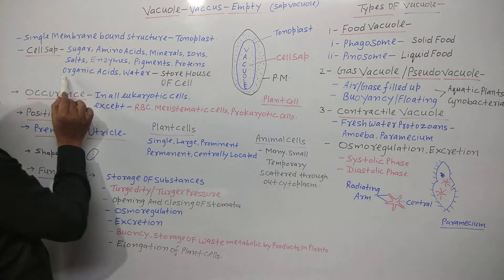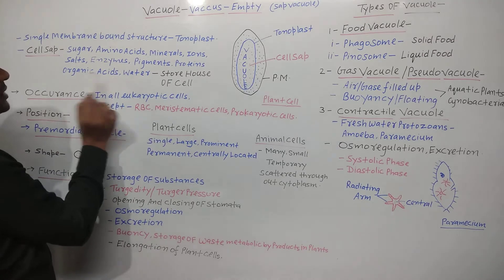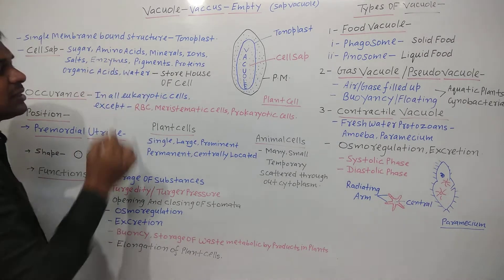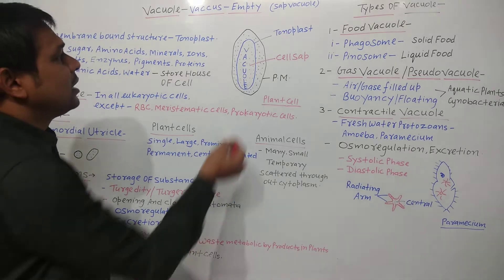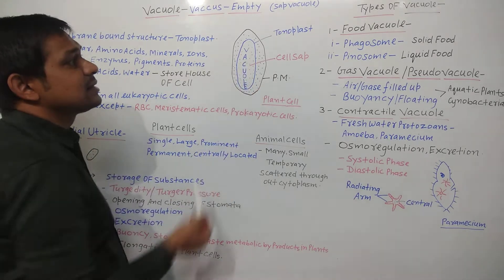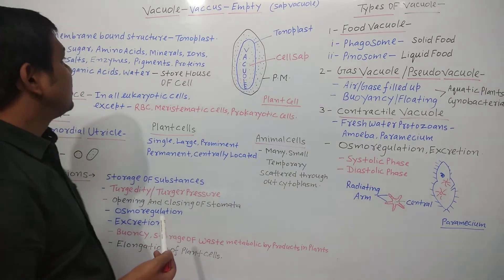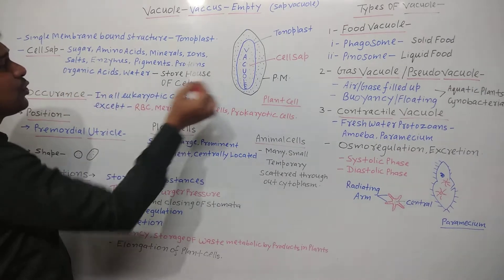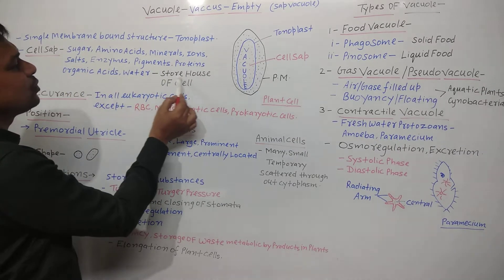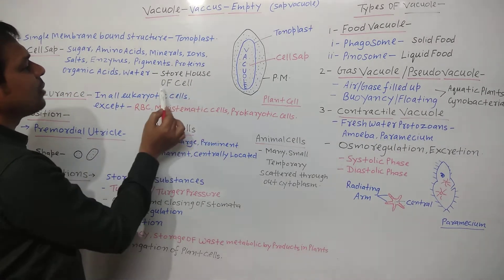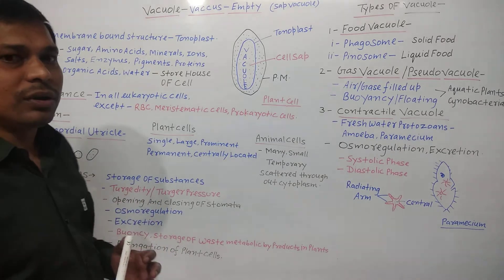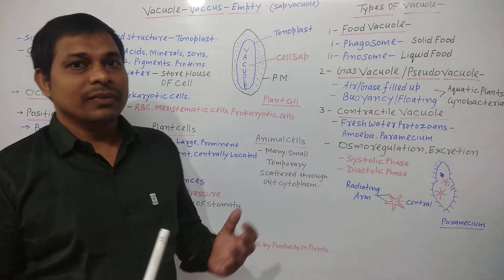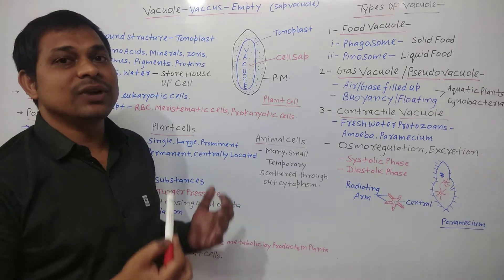The cell sap contains materials like sugars (carbohydrates), amino acids, mineral ions, salts, enzymes, various pigments, proteins, different types of organic acids, and water. All these things are present in the cell sap. That is why the vacuole is considered as the storehouse of the cell — it stores the excess substances of the cell.